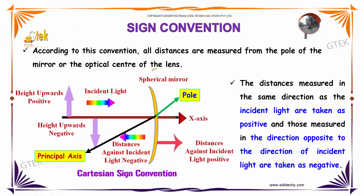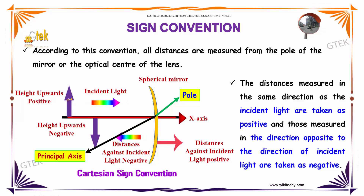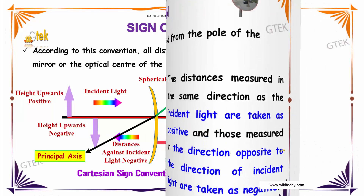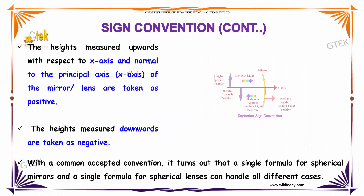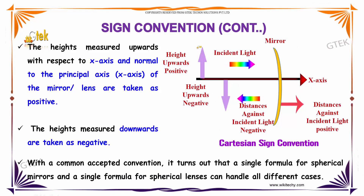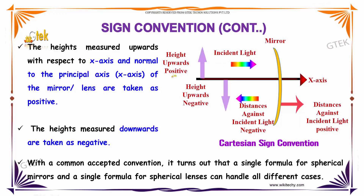According to this convention, all distances are measured from the pole of the mirror or the optical center of the lens. The distance measured in the same direction as the incident light is taken as positive. Against the incident light, it is taken as negative. The height measured upwards with respect to the x-axis and normal to the principal axis of the mirror is taken as positive, and the height measured downwards as negative.